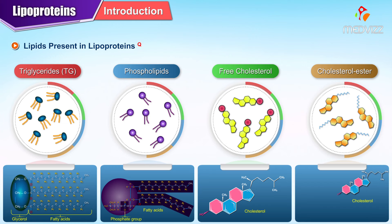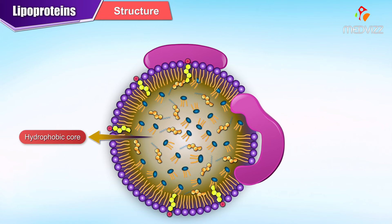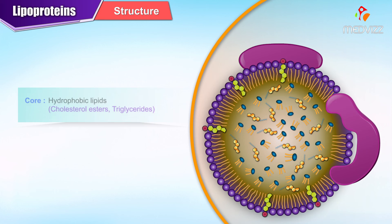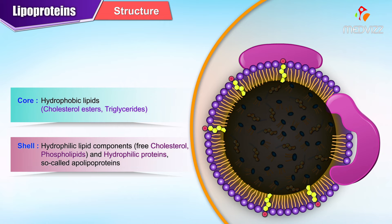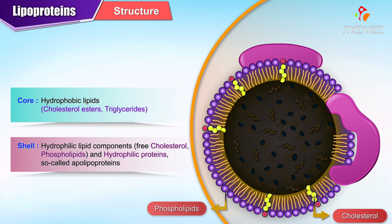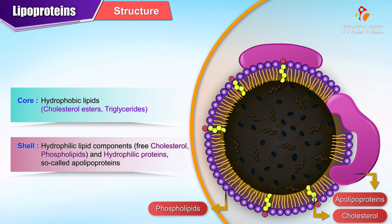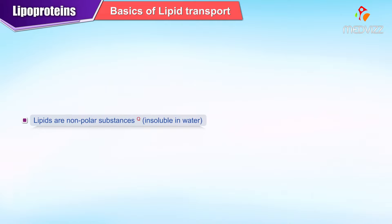The structure consists of a hydrophobic core and a hydrophilic shell of varying lipids. The core, which is hydrophobic, is made up of cholesterol esters and triglycerides. The shell, which is hydrophilic, consists of free cholesterol, phospholipids and hydrophilic proteins called apolipoproteins.